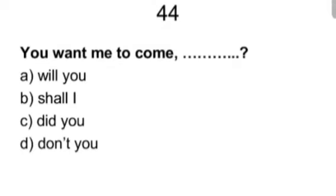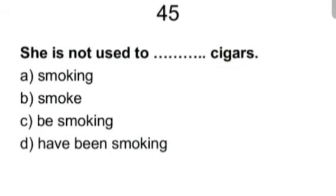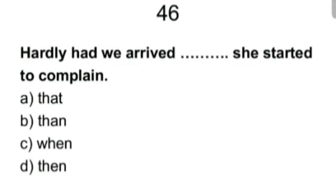You want me to come blank. Will you? Shall I? Did you? Don't you? Answer is don't you. It's a question tag. The last part is the tag and the first part is the question. Last part is the tag and the first part is the statement. The comma should be replaced with a full stop. She is not used to blank cigars. Smoking, smoke, be smoking, have been smoking. Smoking. Forty six. Hardly had we arrived blank. She started to complain. That, than, when, then? Answer is when. Hardly had to be followed by when. If it is no sooner, then it should be followed by then.